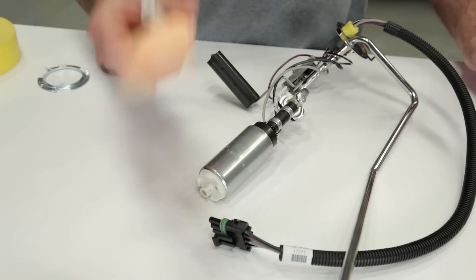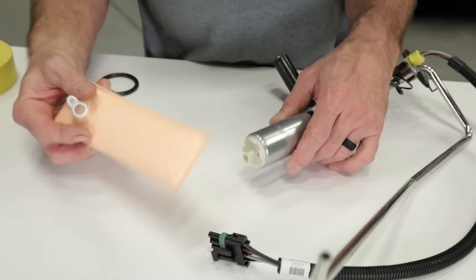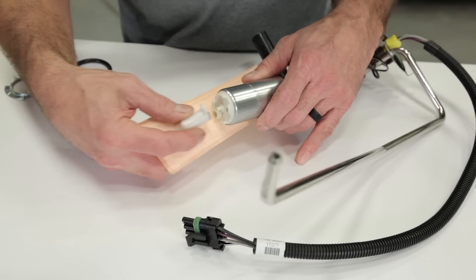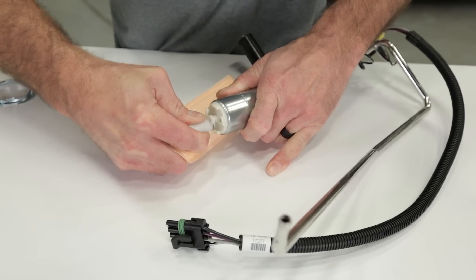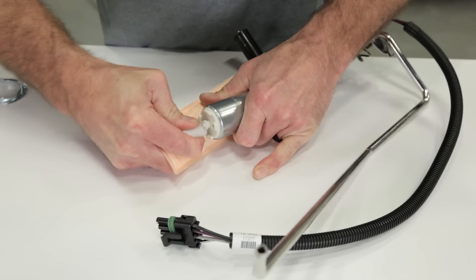I went ahead and laid them out on the bench so I have easy access. Now we can install the supplied hydromat onto the pump using the alignment dial to locate it. Press firmly on the plastic portion of the filter assembly and seat it fully onto the pump assembly.